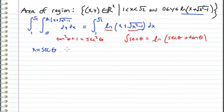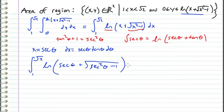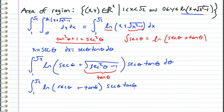So substituting x = secant theta gives dx equal to secant theta tan theta d theta, since secant theta tan theta is just the derivative of secant theta. Substituting secant theta in for x, we get the integral of natural log of secant theta plus the square root of secant squared theta minus 1, times secant theta tan theta d theta. Using the identity tan squared theta plus 1 equals secant squared theta, the square root term reduces to tangent theta. So we can rewrite this as the integral of natural log of secant theta plus tan theta, times secant theta tan theta d theta.